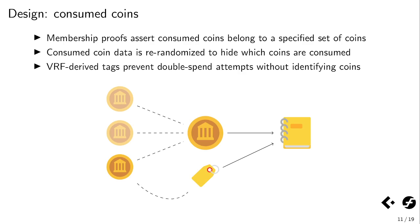The idea behind consumed coin identity hiding is that we use a so-called membership or one-of-many proof. That asserts or proves in zero knowledge that the coins being consumed in a transaction belong to some specified set without identifying which one it is. Further, consumed coin data is re-randomized, which hides which coins are being consumed while still allowing us to perform algebraic operations on that re-randomized coin. Finally, to ensure we don't have double spending when hiding the identity of consumed coins, we have a verifiable random function-derived tag called the linking tag — similar to what other protocols call nullifiers or key images. This enables double-spend protection by having a separate proof asserting the tag was uniquely and properly generated.